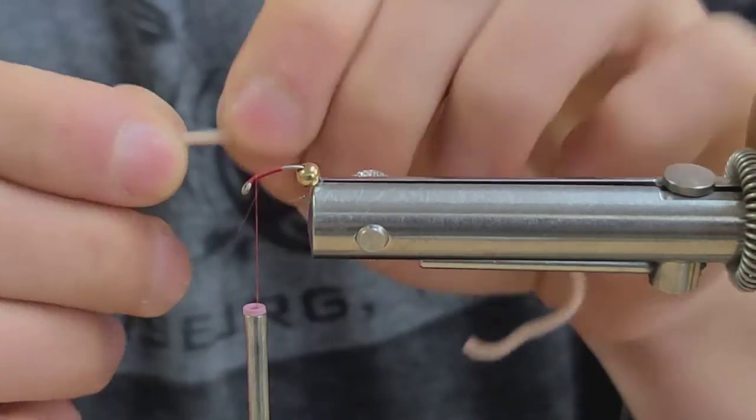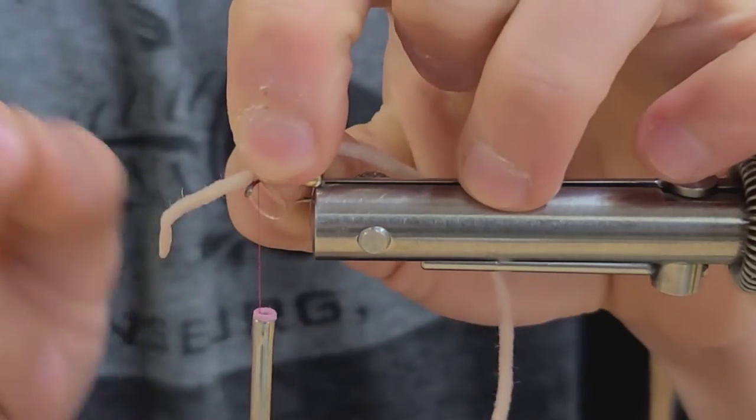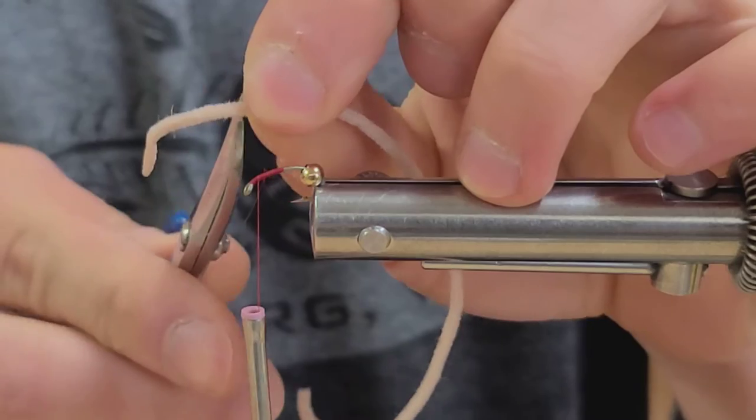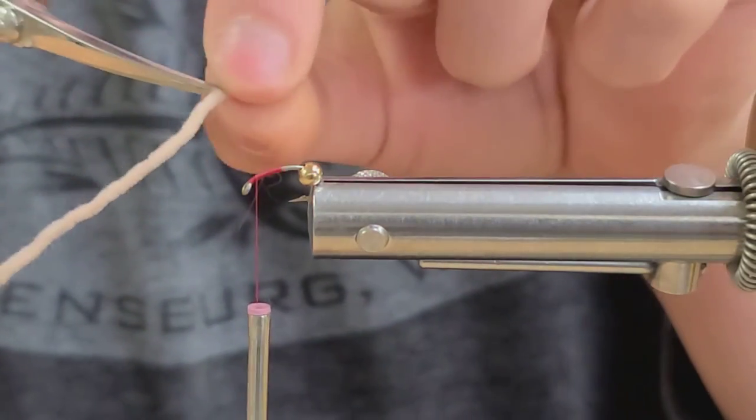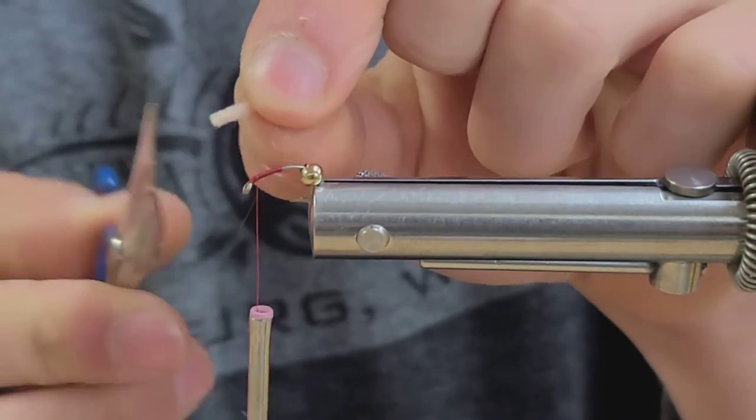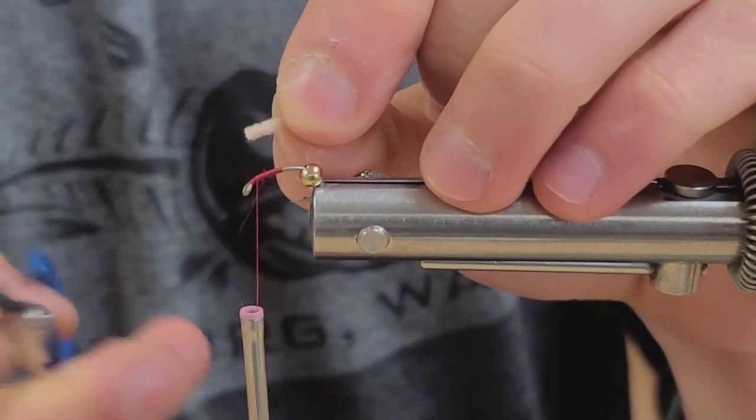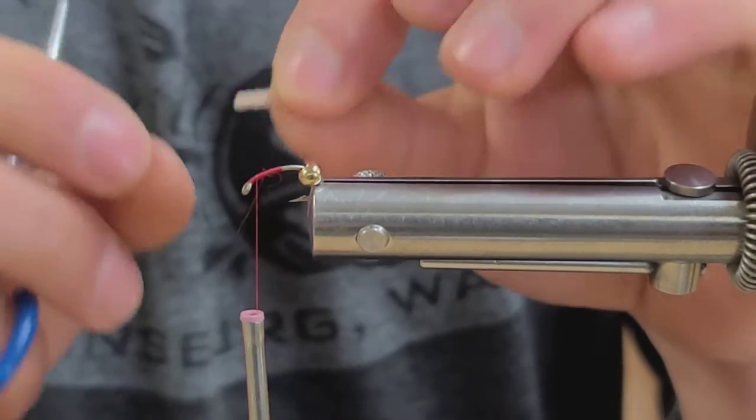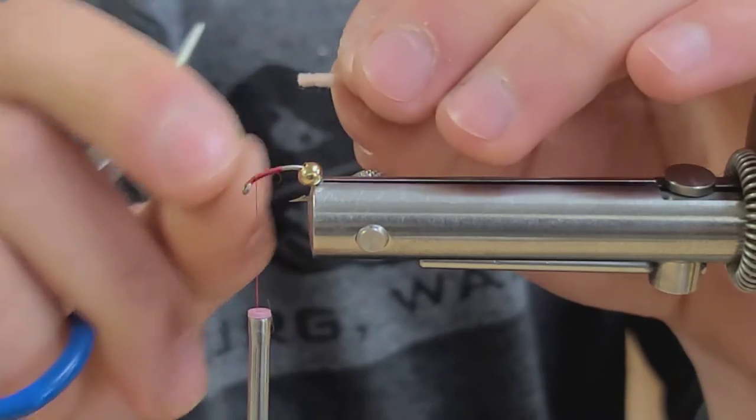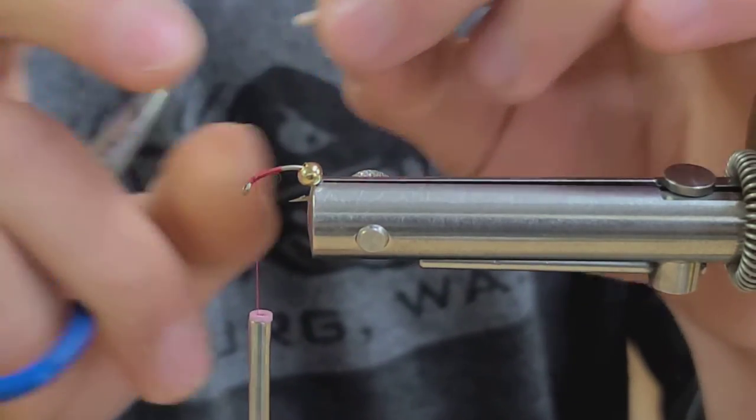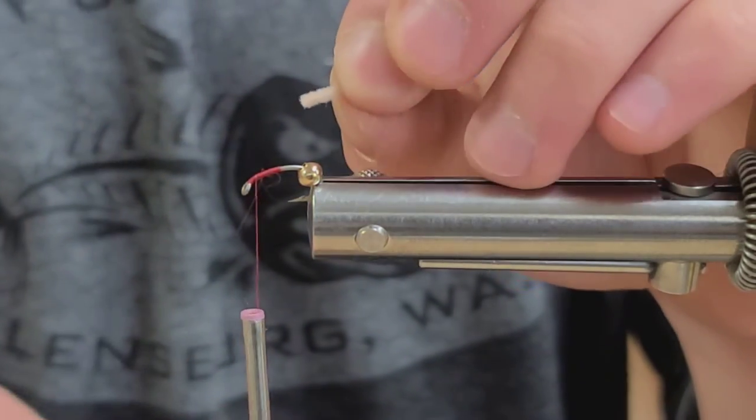And now I'm going to measure out the distance that I want that worm body to extend. And at that point, I'm going to cut just a little bit further behind. And this is a trick that I don't see a lot of fly tiers do, but when tying with chenille, you know, to keep a nice slim body, you want to pick out a lot of the fibers so you just tie down the cord.